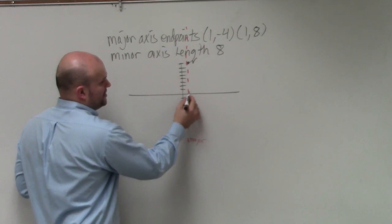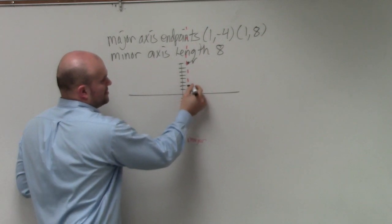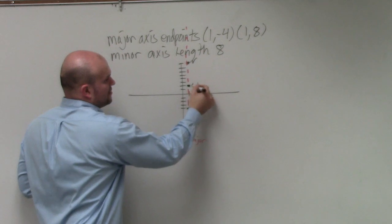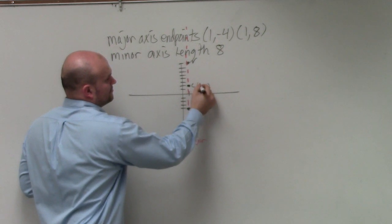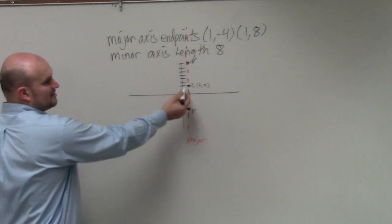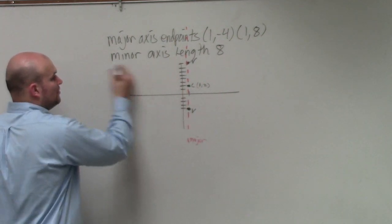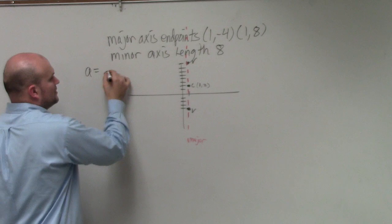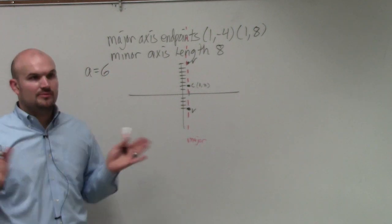So 1, 2, 3, 4, 5, 6. So that's my center, which is 1, 2. Does everybody agree with me? Okay. So therefore, the center, since the whole distance is 12, that means A is equal to 6. Would everybody feel comfortable with that?